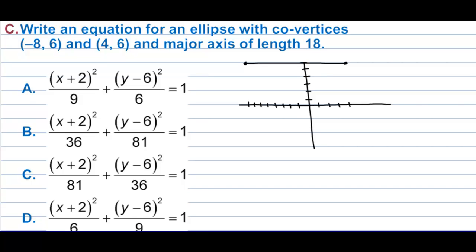The major axis has a length of 18. We can also locate the center — since the co-vertex span is 12, we go 6 from either side, putting the center at (-2,6).